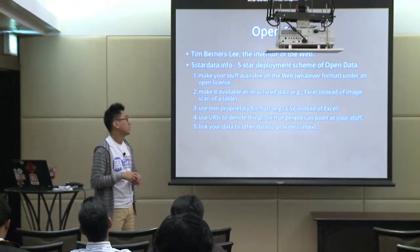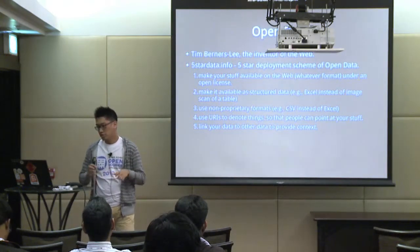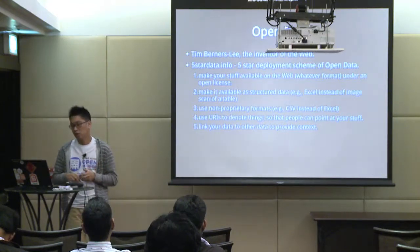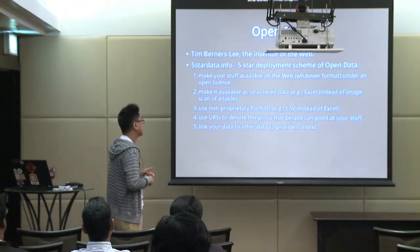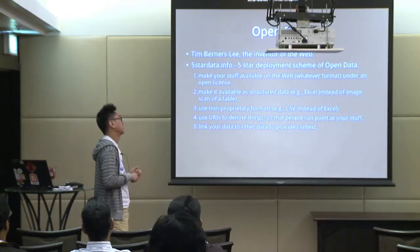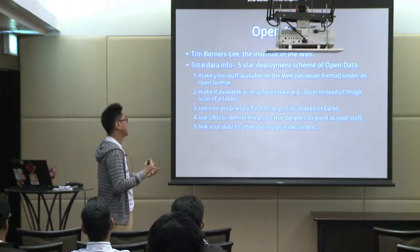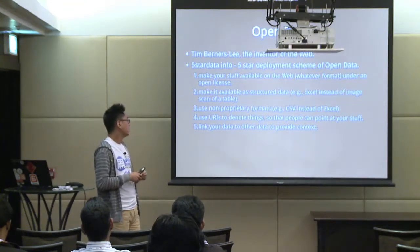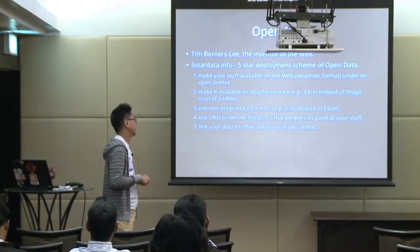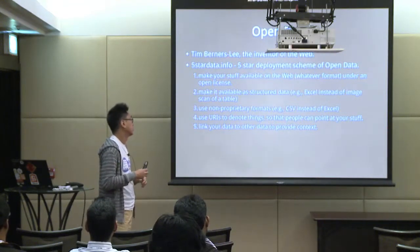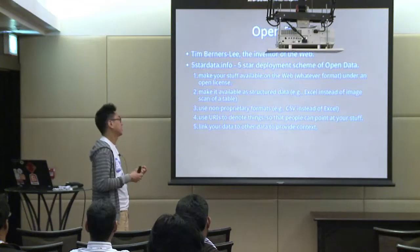The inventor of the web, Tim Berners-Lee, also created the website 5stardata.info, which encourages people to create more open data. One-star open data means making your stuff available on the web. Two-star means it should be in structured data format like Excel instead of an image. Using an open format instead of Excel to distribute your data is three-star open data. Four- and five-star involve using URIs to link your data or link it to other data as well.